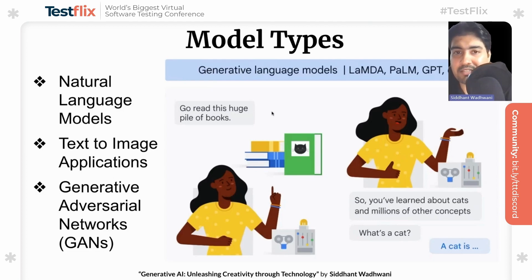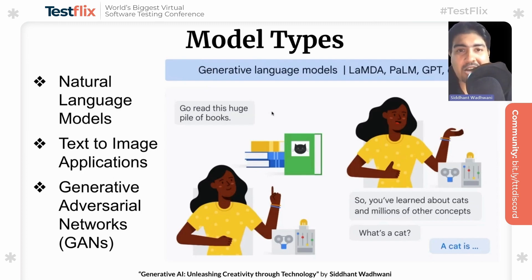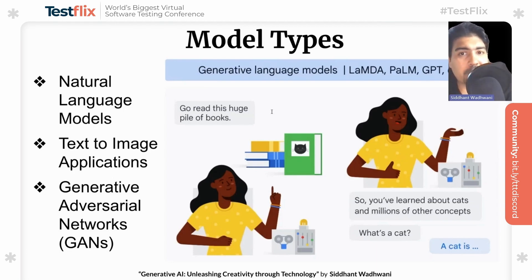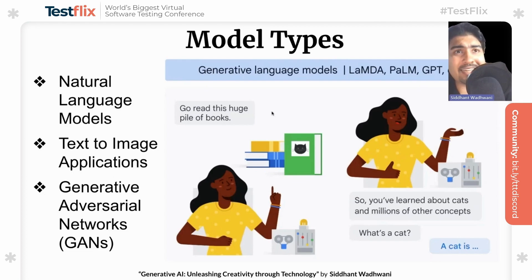For text-to-image applications, you can relate them to operating systems. MidJourney is closely related to macOS — it's kind of closed, API-centric, and art-centric. DALL-E is more like Windows, with open APIs and superior ML algorithms. And StableDiffusion is more like Linux because it's open-source. For generative adversarial networks, or GANs, you have a generator and a discriminator, where the discriminator continuously gives feedback to the generator to improve its ability to create realistic data. If you're a beginner, use paid services like MidJourney or Lensa. If more experienced, try Google Colab or Jupyter notebooks. For enthusiasts, try GitHub Copilot, and for programmers, build your own models using Hugging Face, Vertex AI, or MakerSuite.